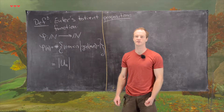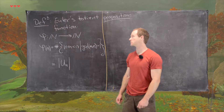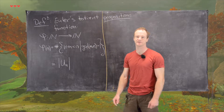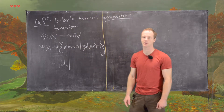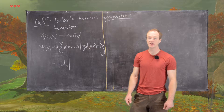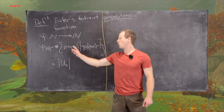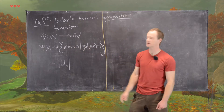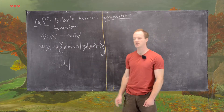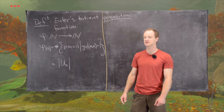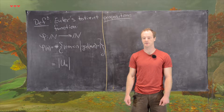In this video we're going to look at another result involving the Euler phi function. Let's recall how it's defined: phi of a natural number n equals the number of positive integers between 1 and n that are relatively prime to n. This is also the size of the group of units modulo n.